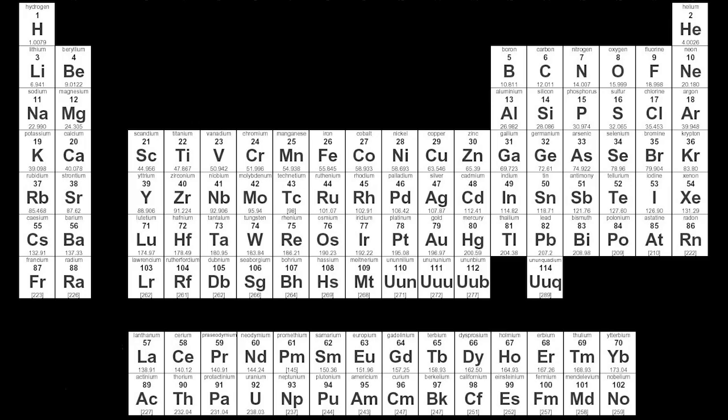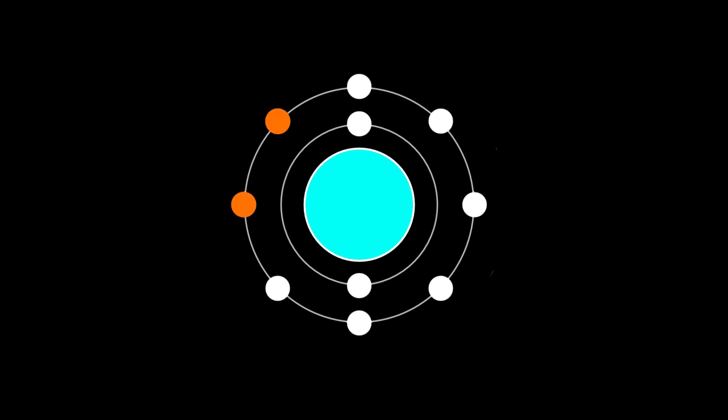All elements in the periodic table strive to be like the noble gases. They want 8 electrons on their outer orbit so they can become stable. In order for this to happen, elements must lose or gain an electron.